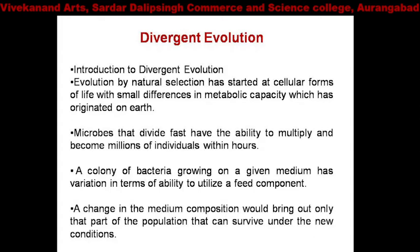Microbes that divide fast have the ability to multiply and become millions of individuals within hours. A bacteria colony has variation in terms of ability to utilize a feed component. A change in the medium composition would bring out only that part of the population that can survive under the new condition.